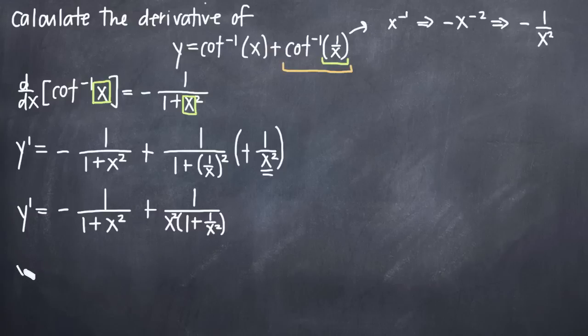And when we simplify that denominator further, we'll distribute the x squared across these two terms. x squared times 1 is just x squared. x squared times 1 over x squared, we get the x squared terms to cancel and we're just left with 1.